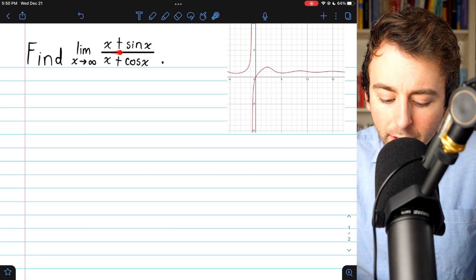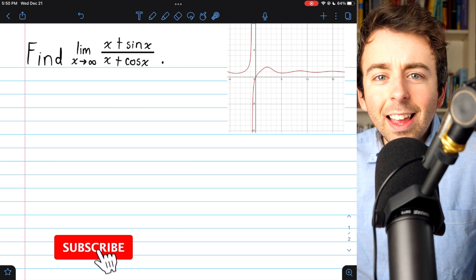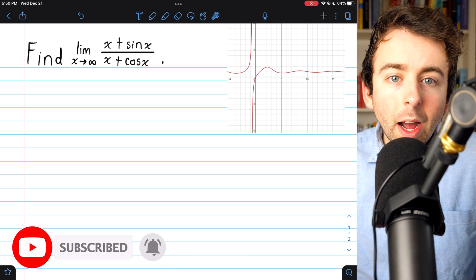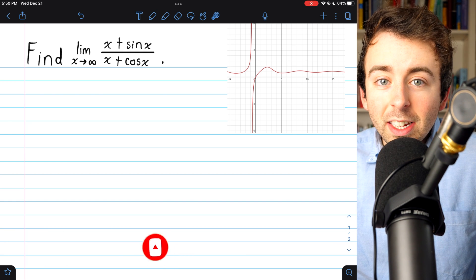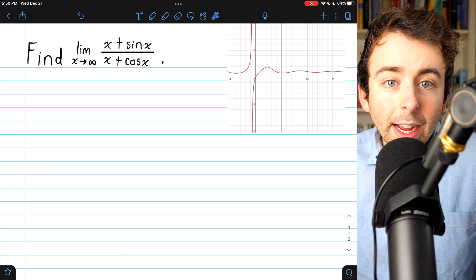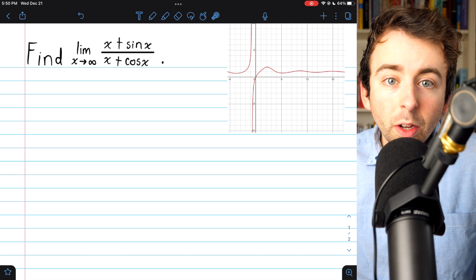What's the limit of x plus sine x over x plus cosine x as x goes to infinity? If you give it a little bit of thought, you'll probably arrive at the conclusion that it must equal 1,